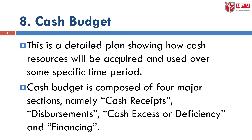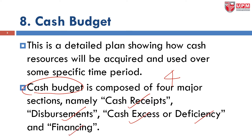What is a cash budget? This is a detailed plan showing how cash resources will be acquired and used over some specific time period. A cash budget is composed of four major sections: cash receipts, disbursement, cash excess, deficiency, as well as financing.